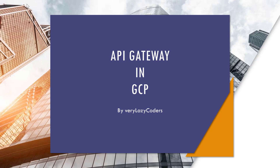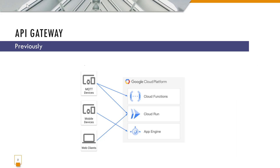This is going to be on API gateway in GCP. So why do we need an API gateway? Let's say you're creating a multi-service or microservice-based application and you're using multiple services in GCP like Cloud Function and Cloud Run, and you want to coalesce all these to form one particular interface — the tool you would use is basically the API gateway.